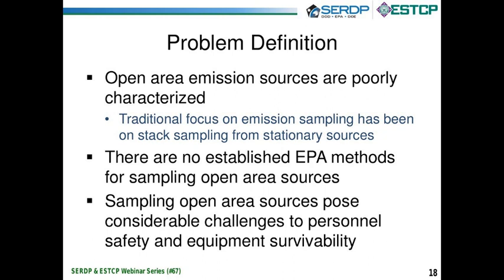So what is the problem? In general, open area emission sources are poorly characterized, because of the difficulty in characterizing them and because the EPA's traditional focus has been on sampling from stationary sources that have smoke stacks. As a consequence, there really are no established EPA methods for sampling open area sources. There are a couple of other test methods, but they have not been codified at this point.